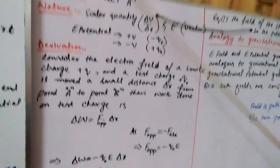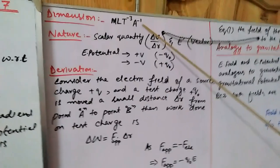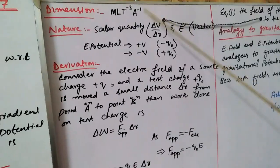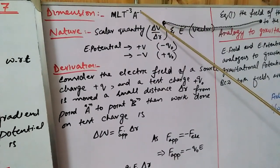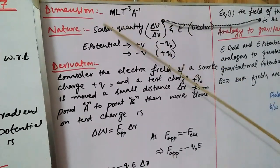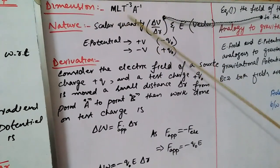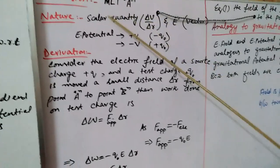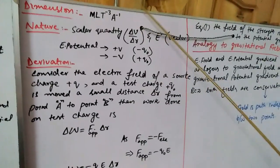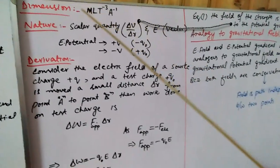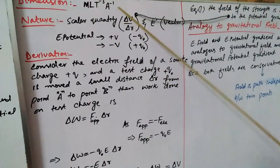The dimension of potential gradient is MLT⁻³A⁻¹. I am assigning you a task: derive it by yourself and then match your answer with this dimension.